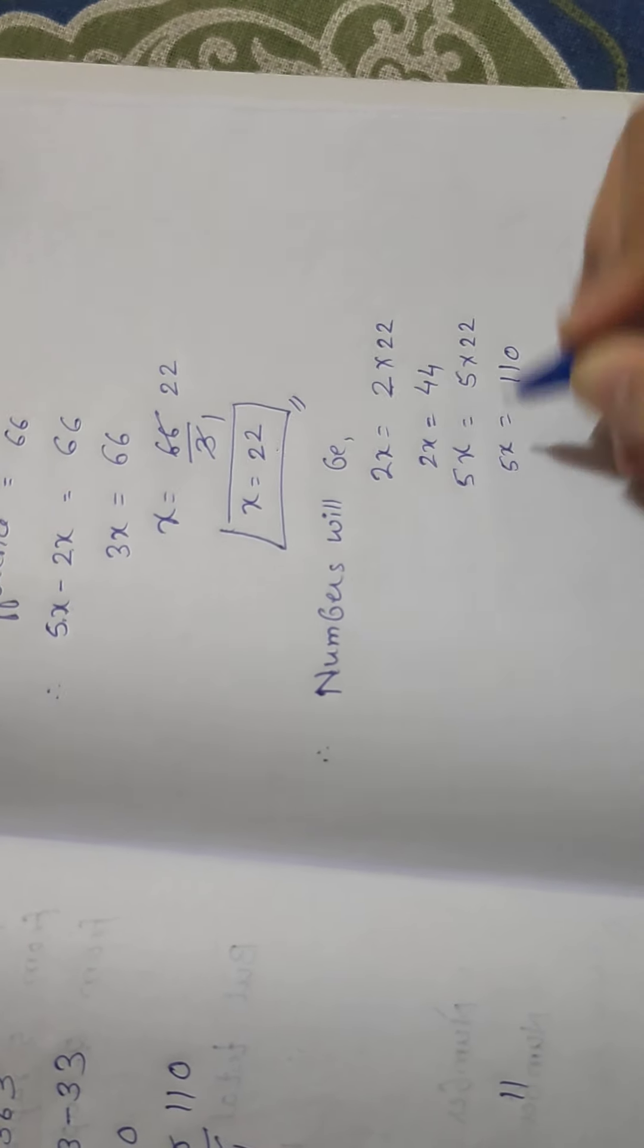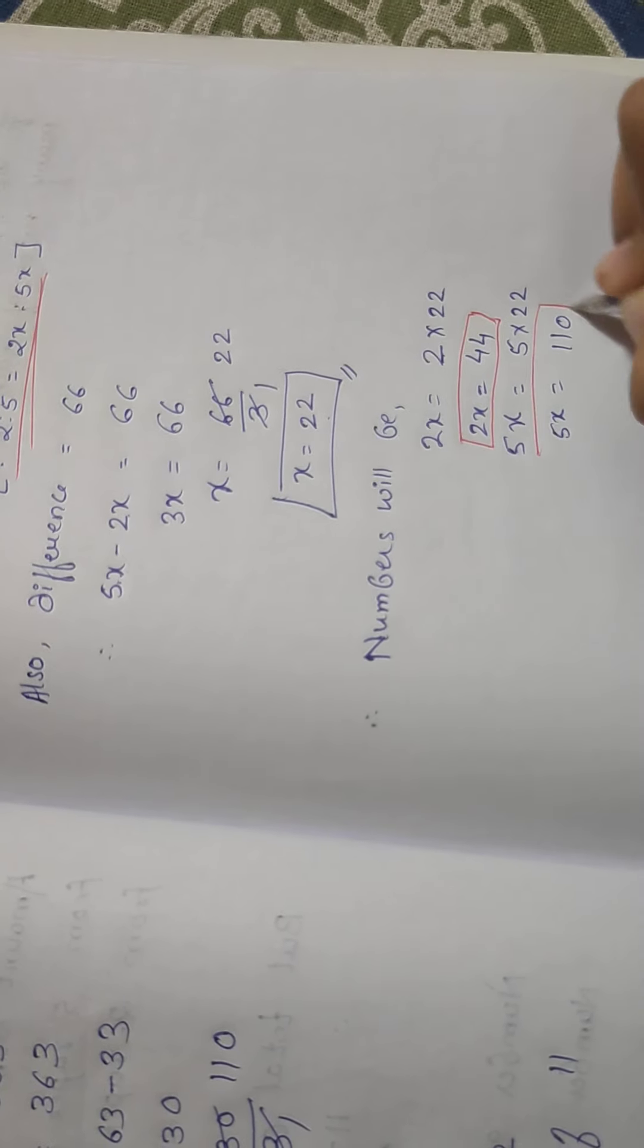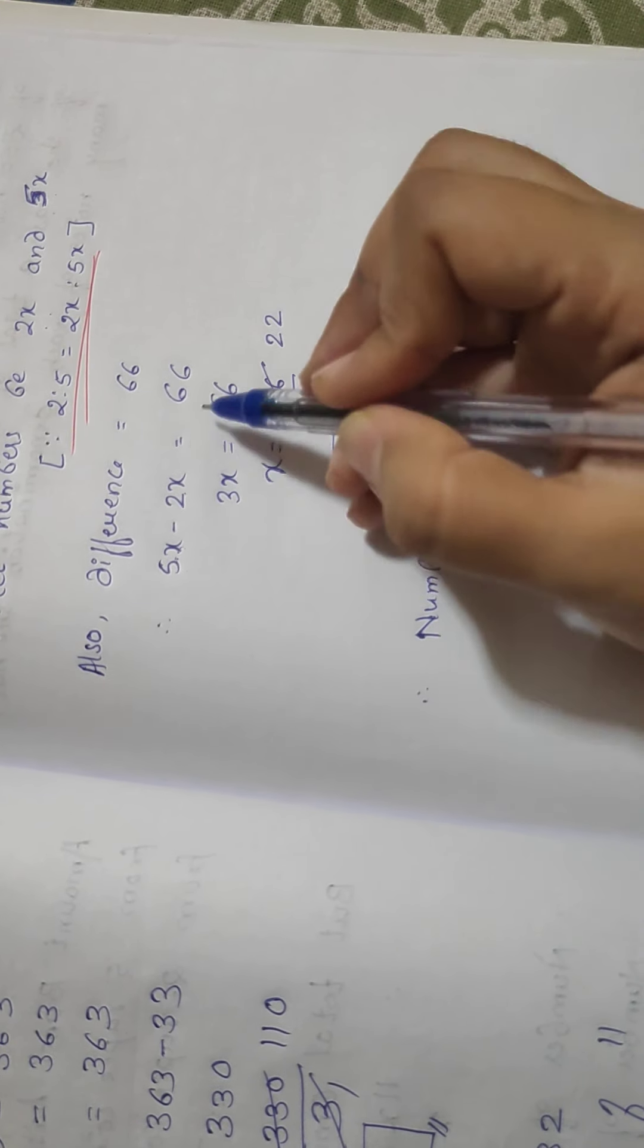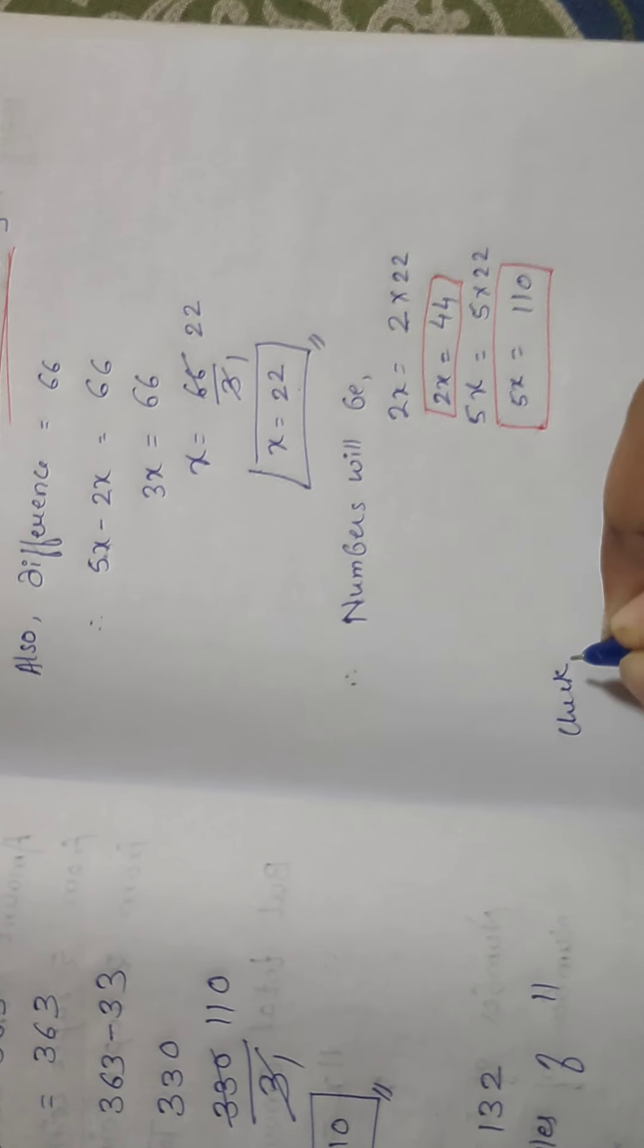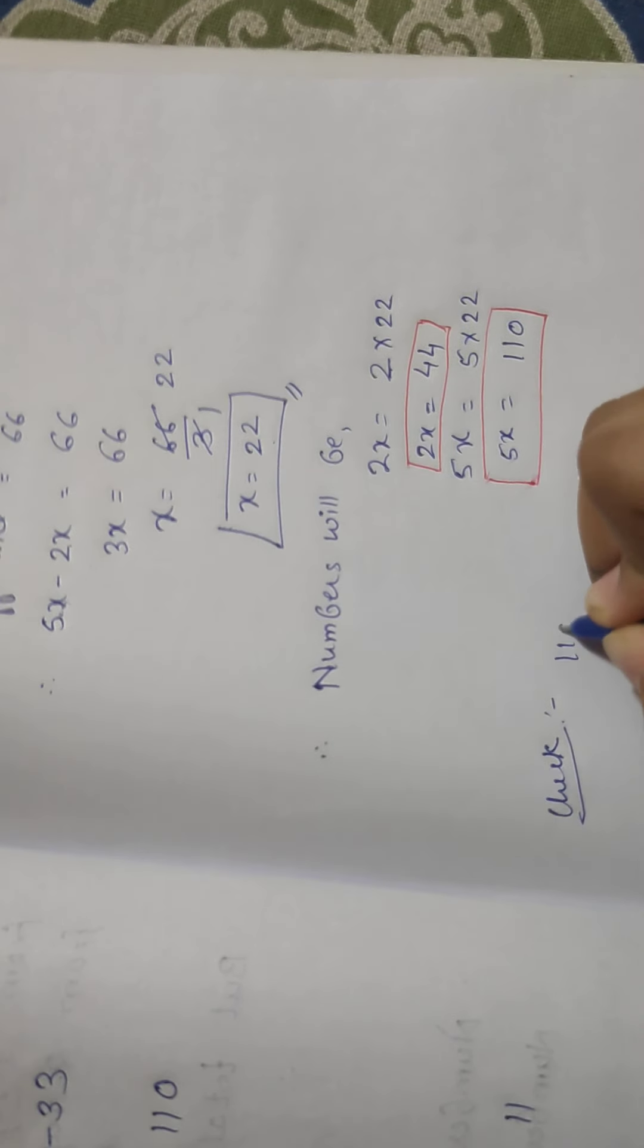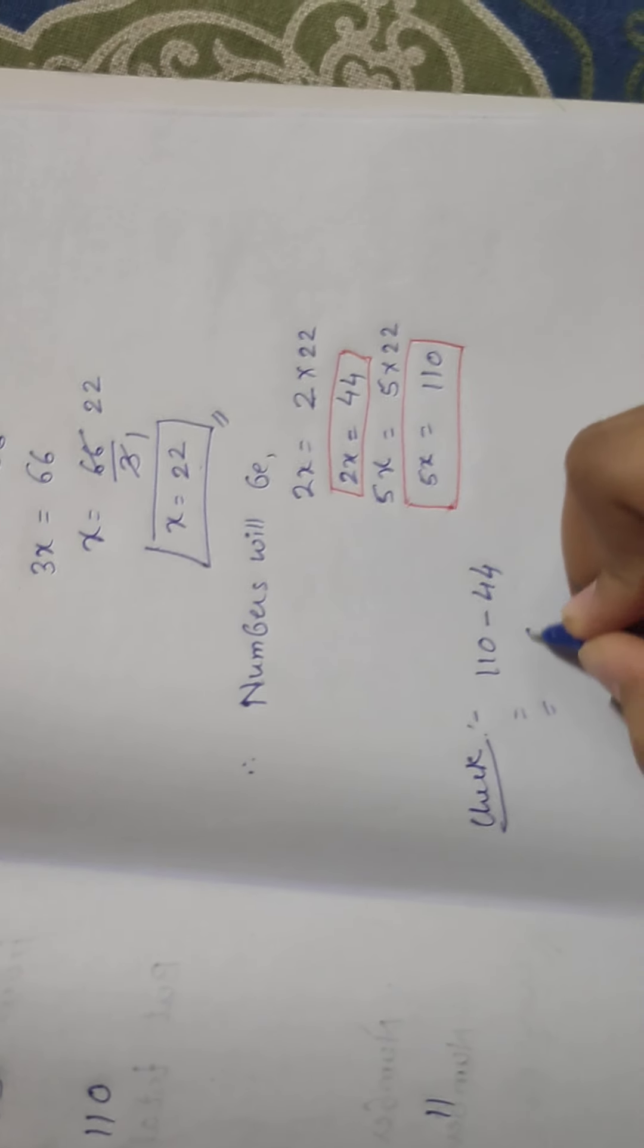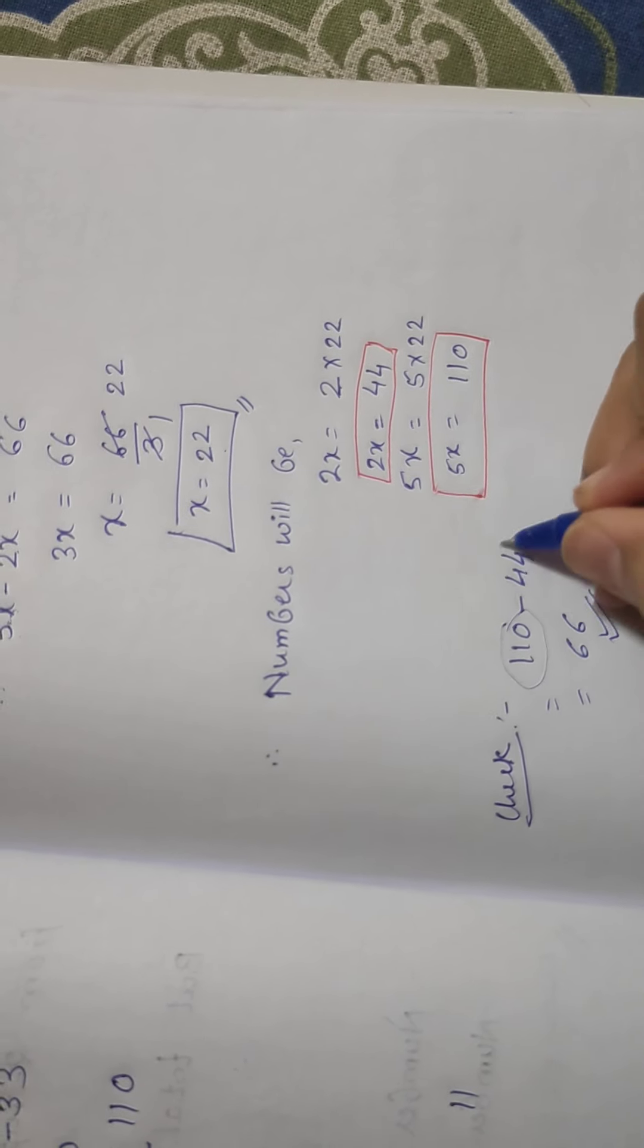So now let us see whether our answer, whether our solutions or whether these terms are correct or not. So you can check them with the help of subtraction. So what we have taken? 5x minus 2x is 66. Let us see whether LHS and RHS are equal or not. So 5x, it is not compulsory to check but we can check it. So 5x is 110 minus 2x is 44. So let us see what is the answer. It is nothing but difference between these two is 66, and these are two whole numbers.